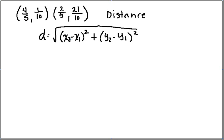The distance formula is the square root of (x2 minus x1) squared plus (y2 minus y1) squared. Alright, so I'm going to let the first point be my x1, y1, and this would be my x2, y2. Now I'm just going to plug into my distance formula.